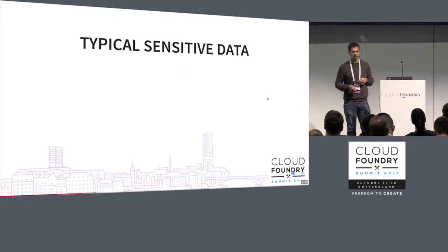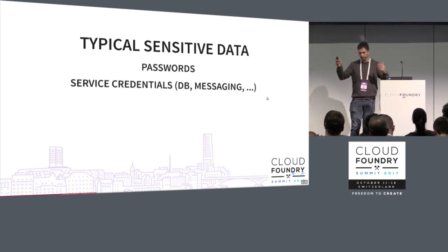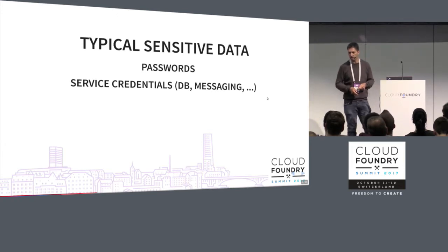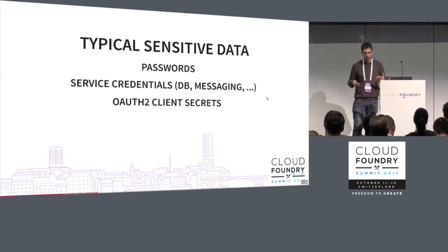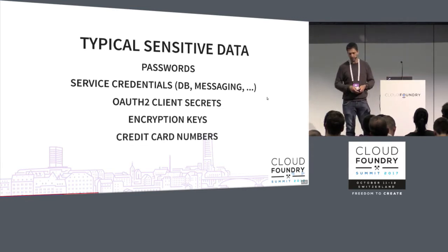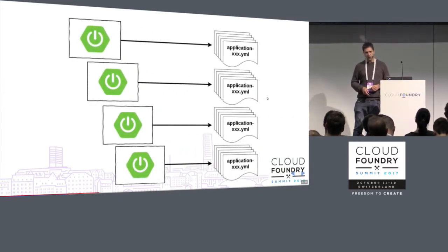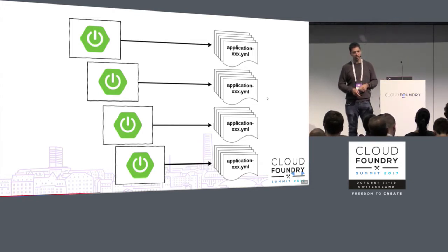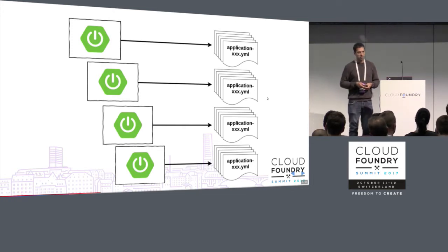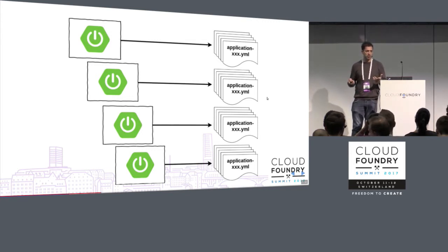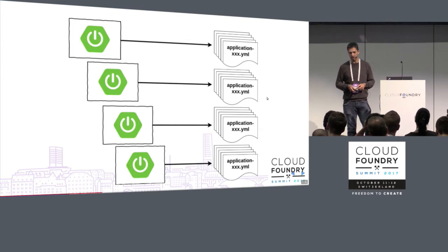What is typical sensitive data? You can think of passwords, service credentials like database passwords, messaging credentials, OAuth2 client secrets, encryption keys, credit card numbers, social security numbers — the list goes on. I think all developers working with Spring Boot know those application properties files and application YAML files. I've seen database credentials in clear text in those application properties every day in projects, even production passwords.